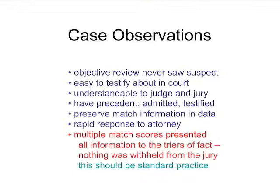The defense attorney kept saying there's no precedent. Well, now there's precedent — computers that do this have been admitted into evidence and testified to. The key thing is that it's not creating anything that isn't there; it's merely preserving the identification information that's in the data. We know the victim's profile, we know the quantitative peaks — they're all there. And perhaps the greatest lesson learned was that presenting multiple match statistics to the jury was fine. We didn't decide for them he did it; we didn't decide some binary decision of inclusion or exclusion. What was presented were three different likelihood ratios — CPI, obligate allele, and quantitative — each based on certain assumptions that were easily explainable to a jury.